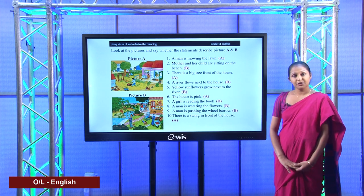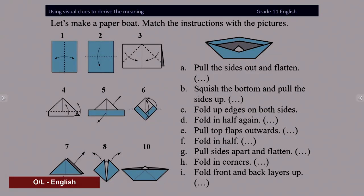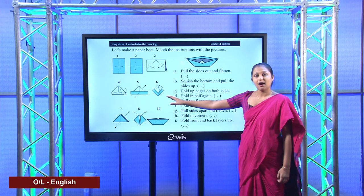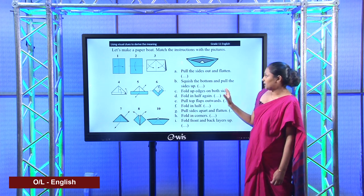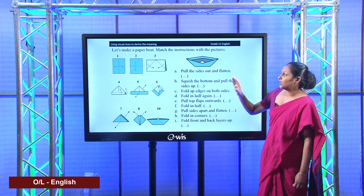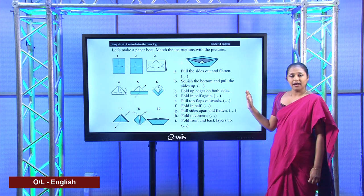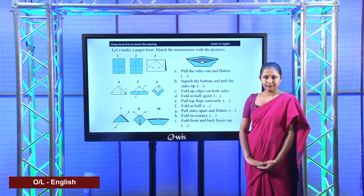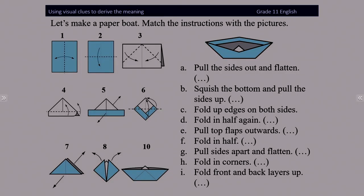Now, children, are you ready to do another activity? In this activity, I have shown two types of instructions. The first type is given in picture clues, but the second set of instructions are given in written form. The picture instructions are in the proper order, but the written instructions are not in the proper order. So you have to match the picture clues with the written instructions and write the relevant number in the given space. Take your exercise book and write down the relevant number. Don't mix up, because if you mix up, you will not get a proper boat.